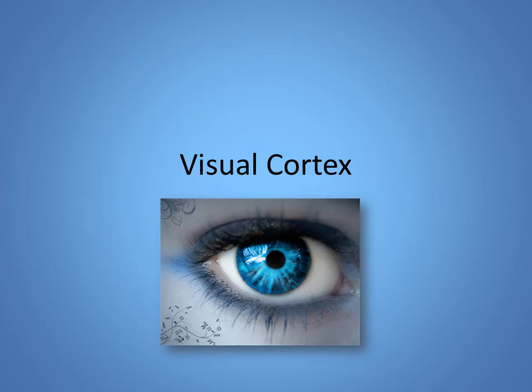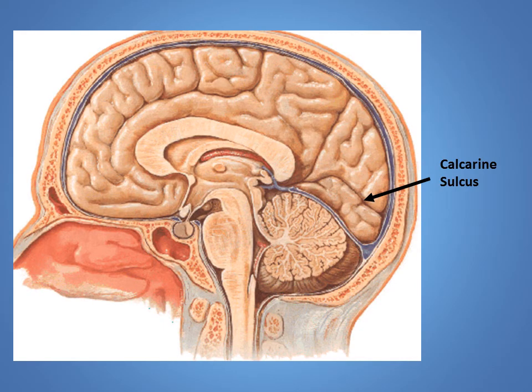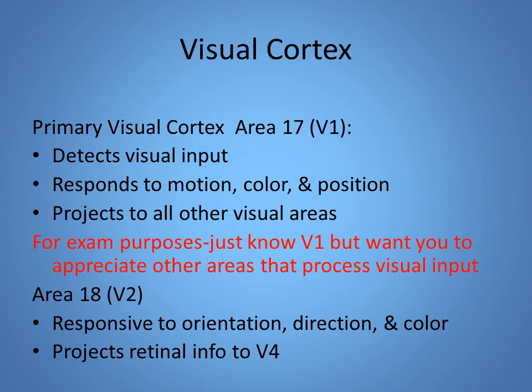Now let's move on to the visual cortex: how do we interpret what we see? The calcarine sulcus is where we process vision in our primary visual cortex. The primary visual cortex quite simply detects visual input — motion, color, position — and then communicates with other visual areas for interpretation. Without interpretation, it's like we're seeing everything for the first time every time. It's our association areas that tell us, 'Oh, that visual thing is a cat.'